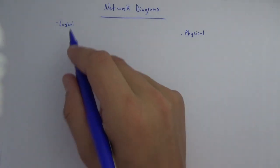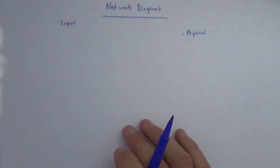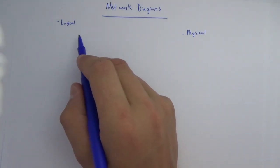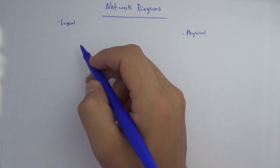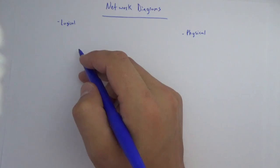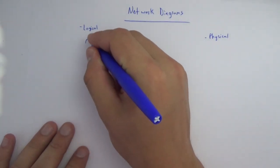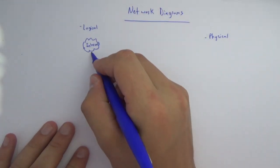Let's look at what these actually look like. I'm going to draw out a logical diagram, and then we'll look at a blueprint for a physical diagram. With the logical diagram, this is essentially showing how every device in the network is connected. I like to start with the internet, because that's usually a single point on our network and everything fans out from there. In today's networking, connection to the internet is really the service we're trying to provide.